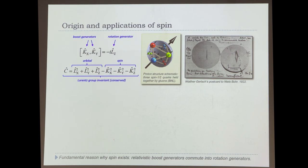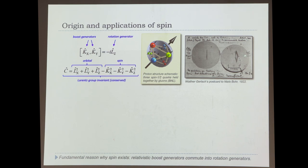That is not strictly true. What they discovered in 1922 was quantization of magnetic moment; they did not attribute it to any particular physical mechanism. They just observed that a beam of silver atoms splits into two when you turn on the magnetic field and concluded that the magnetic moment is quantized. It wasn't until Uhlenbeck and Goudsmit that the mechanism was actually attributed to spin.